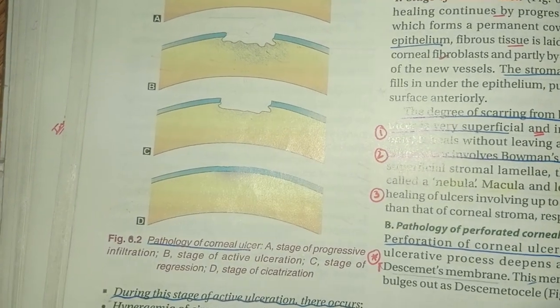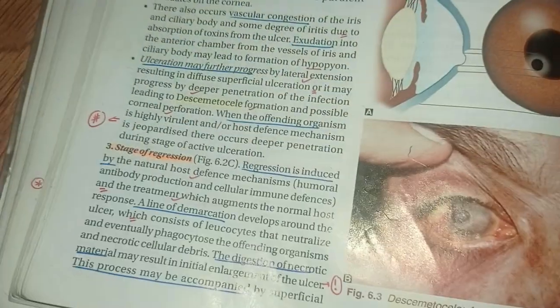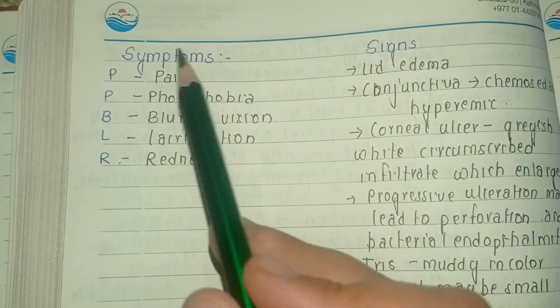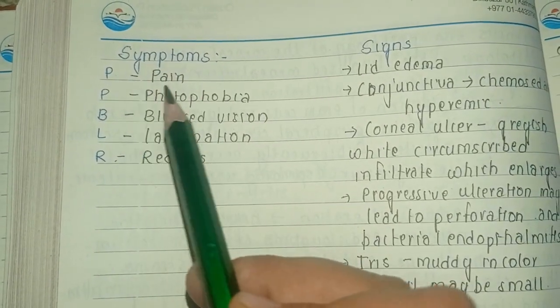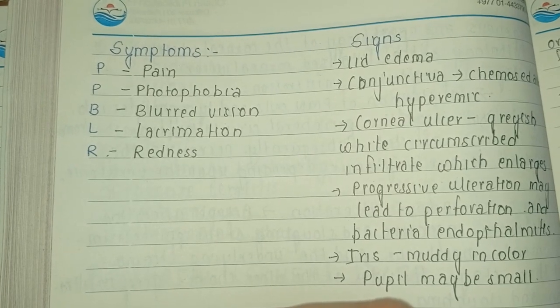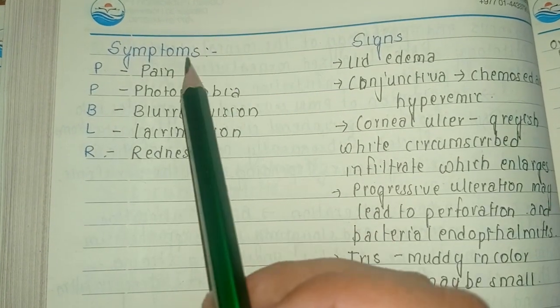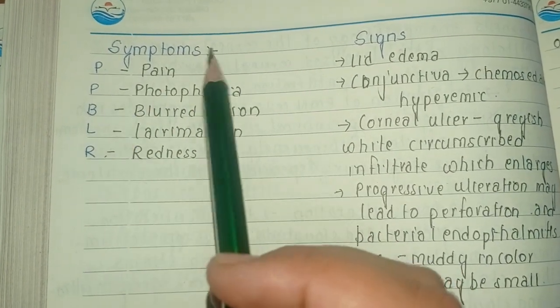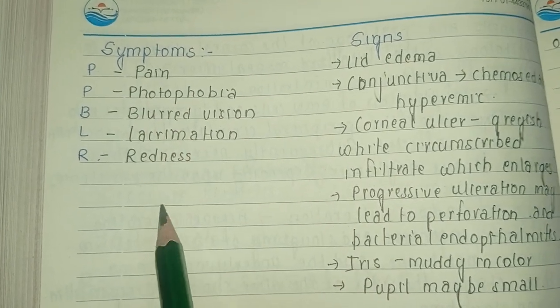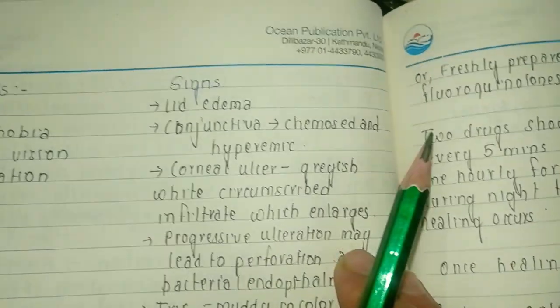For the symptoms, I have made a mnemonic: PPBLR. There is pain due to the mechanical effect of the lids as well as chemical toxins secreted by the bacteria. Then there is photophobia, blurred vision, lacrimation, and redness.